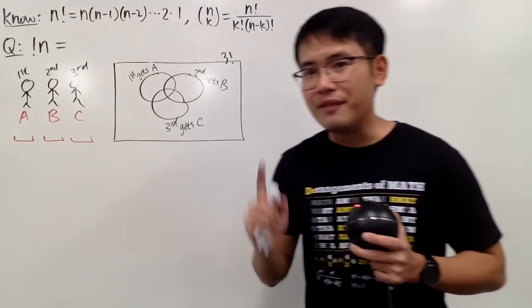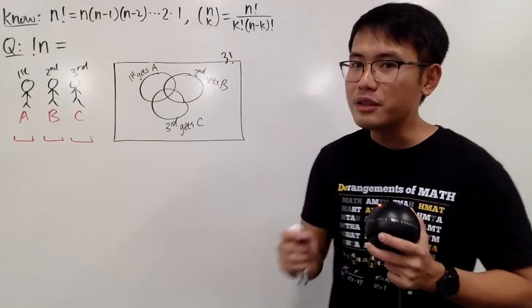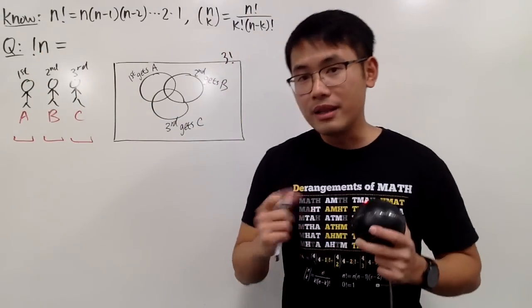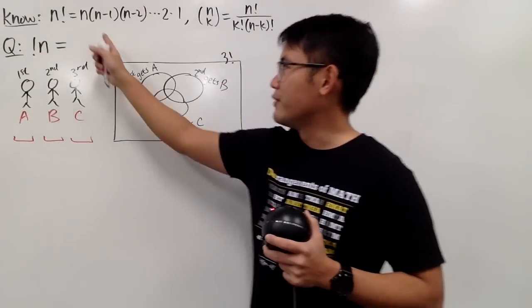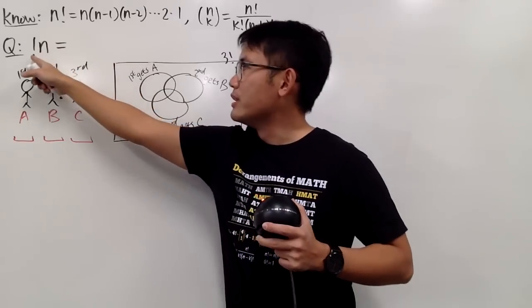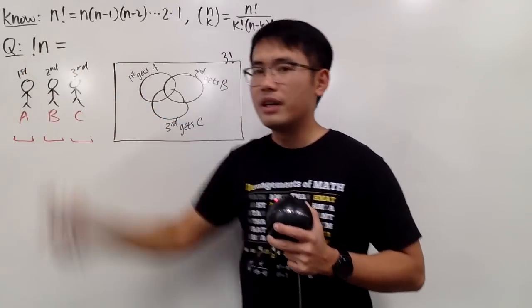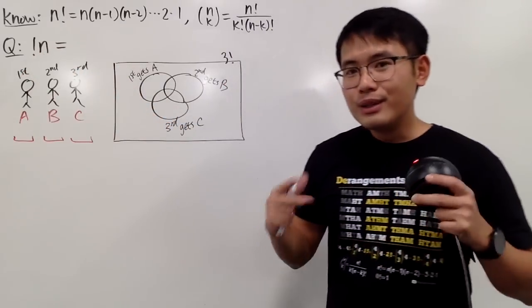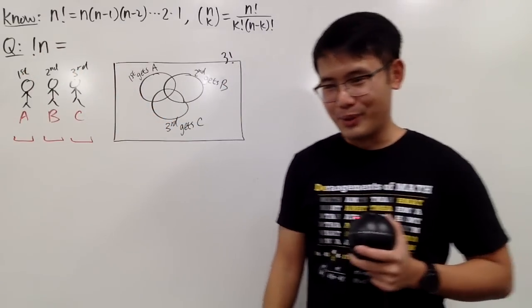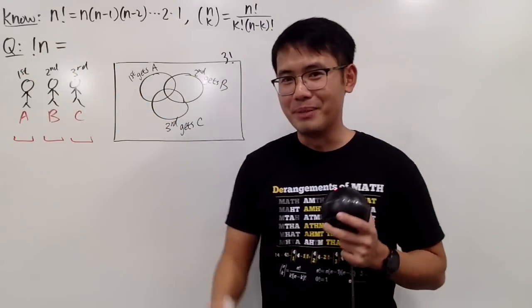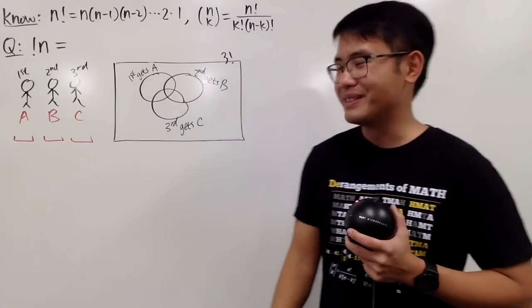Last time I did a video on the recursive formula. Today, let's talk about an explicit formula for the subfactorial of n. To do so, we will have to begin with a story — that's how you do combinatorics proofs sometimes.